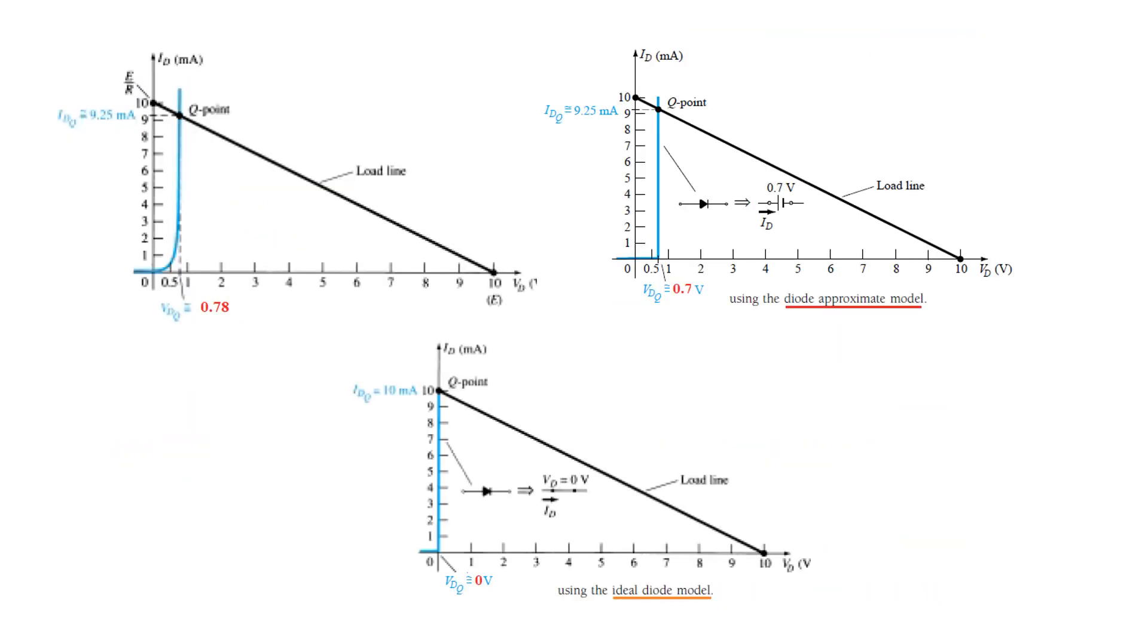And final thing, this is the normal diode characteristics we are using. We may like to simplify it by using the diode approximation model. In the approximation model we just assume that the diode voltage is 0.7 volt constant for the silicon diode. So we draw this line as a straight line. Instead of this curvature line we draw the straight line.